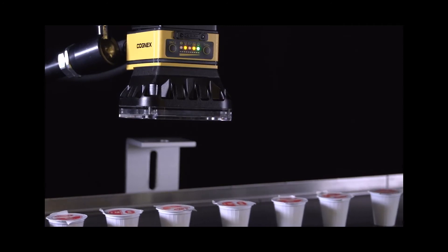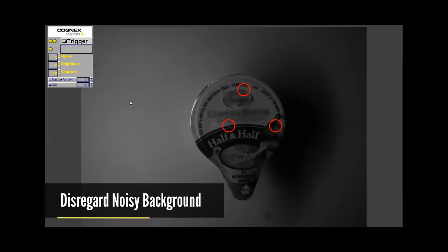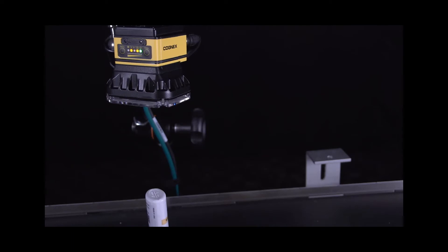These creamer cups have a design on the foil cover, making it extremely difficult to see defects in the foil, such as a wrinkle or a pinhole that would compromise the package's seal. With SurfaceFX, we are able to completely disregard the noisy background and easily locate the defects we're looking for.